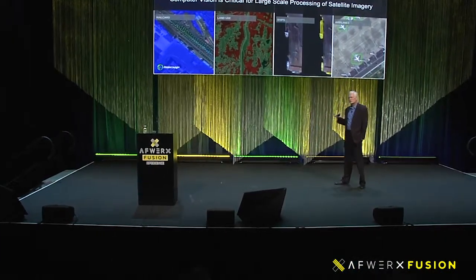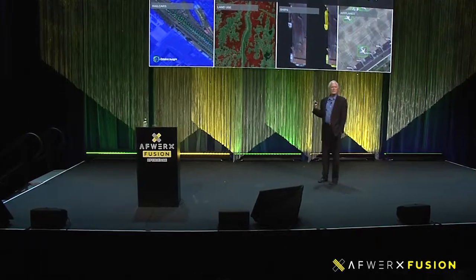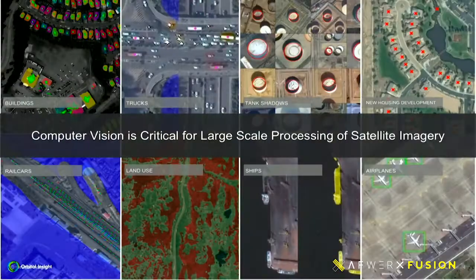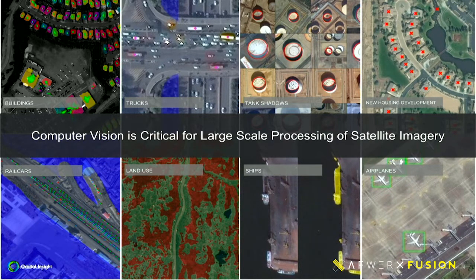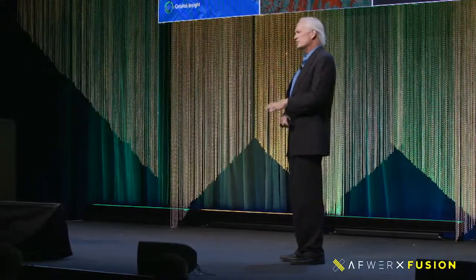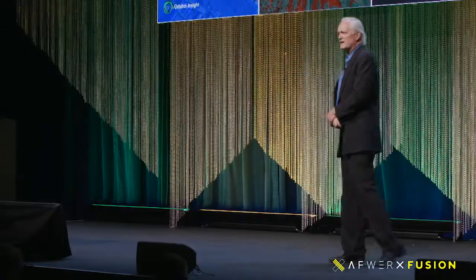The approach we use at Orbital Insight is to leverage the growing power of AI. If you look at what can be done with deep learning, it has moved amazingly over the last five to ten years. I did a PhD in AI about 20 years ago — back then we all loved it, but if you tried to actually do something with it, like count cars or identify cars versus trucks, it was hopeless. You'd make a couple of images work for a research paper, and as soon as you tried to scale it up, nothing worked. That all changed very dramatically with deep learning.